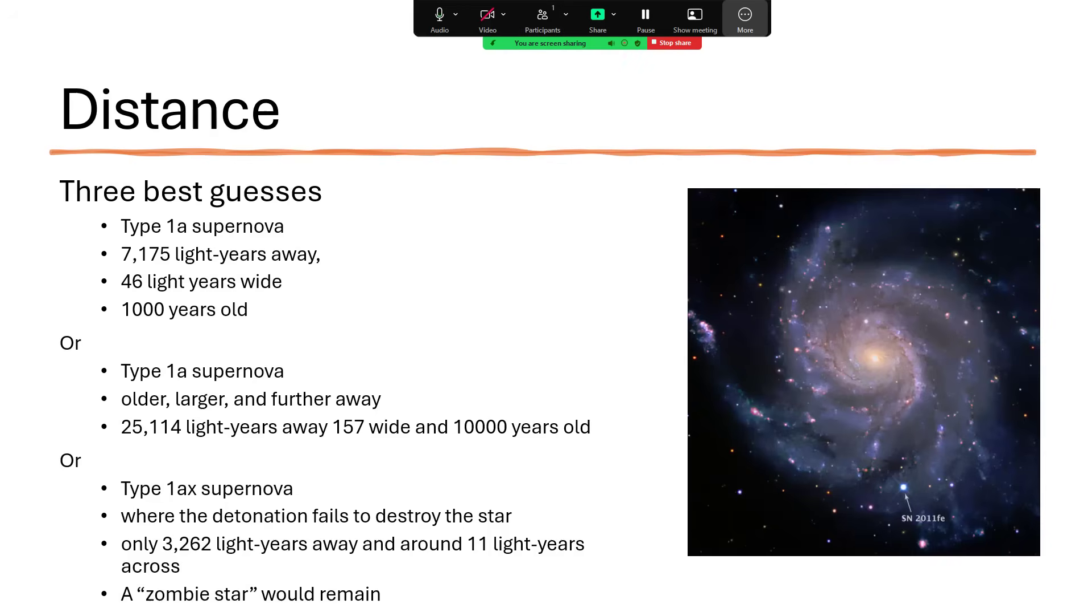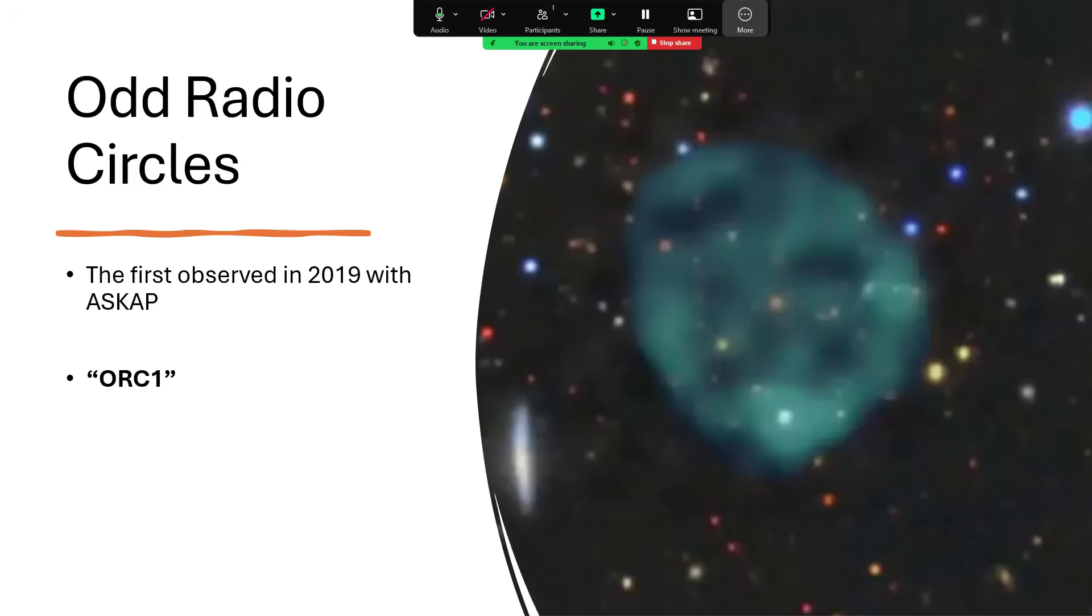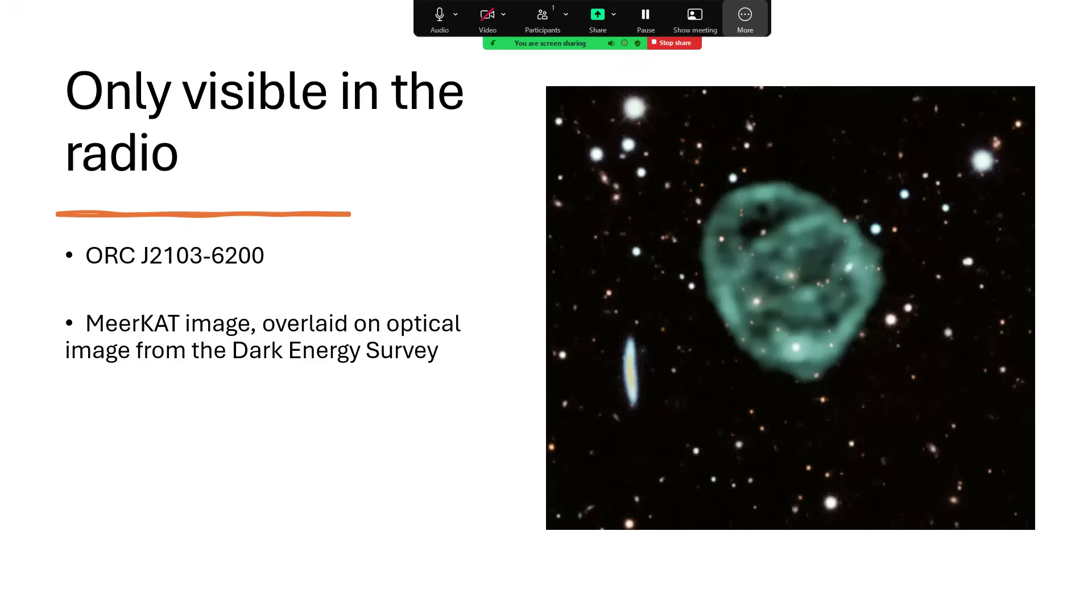But these are not the only things that the ASKAP system has detected. It's detected Teleios and it's detected ORC-1—very Lord of the Rings. ORC, I suspect that's where that's come from, but it's supposed to stand for Odd Radio Circles. We're really getting desperate with the names, aren't we? And these are only visible in the radio spectrum to begin with again.